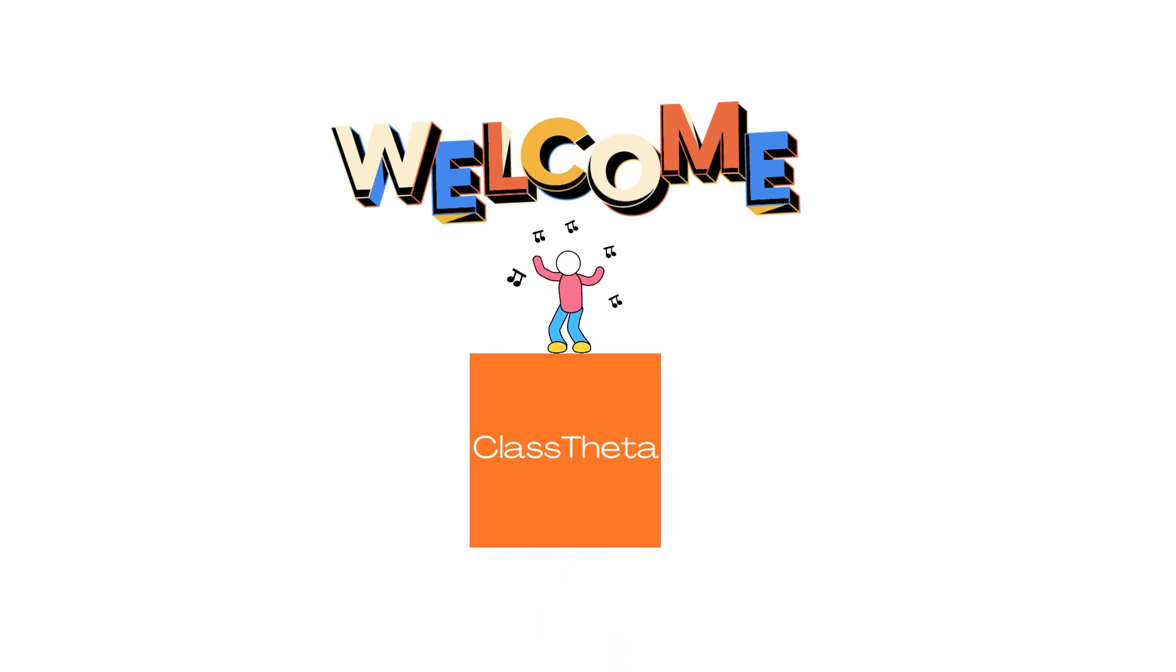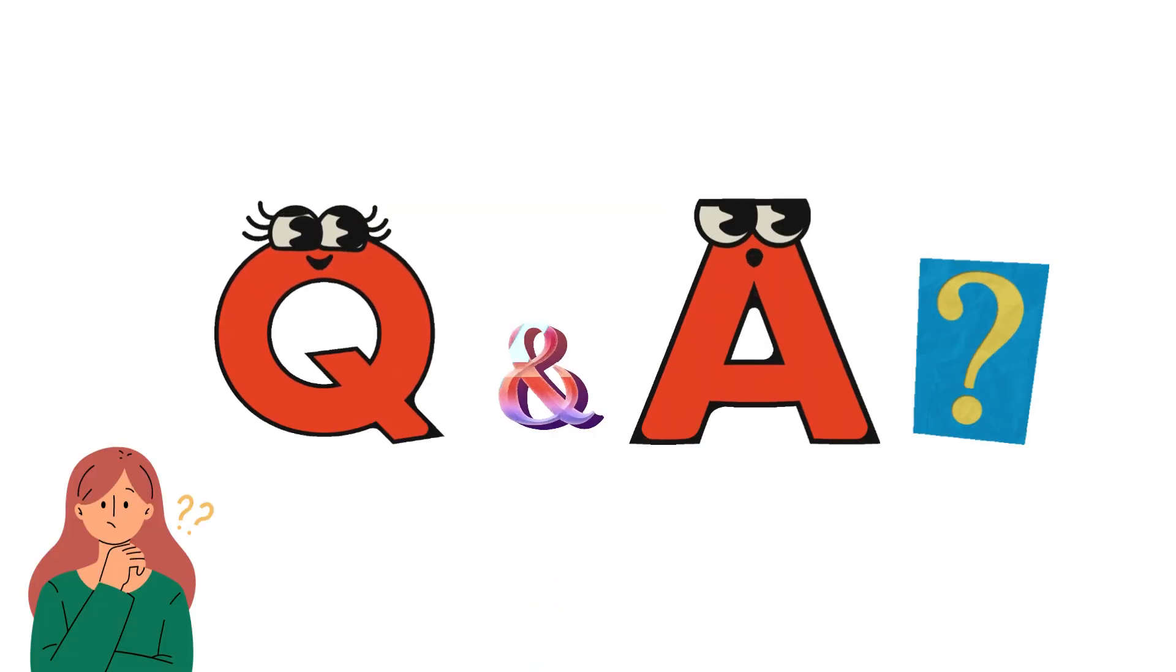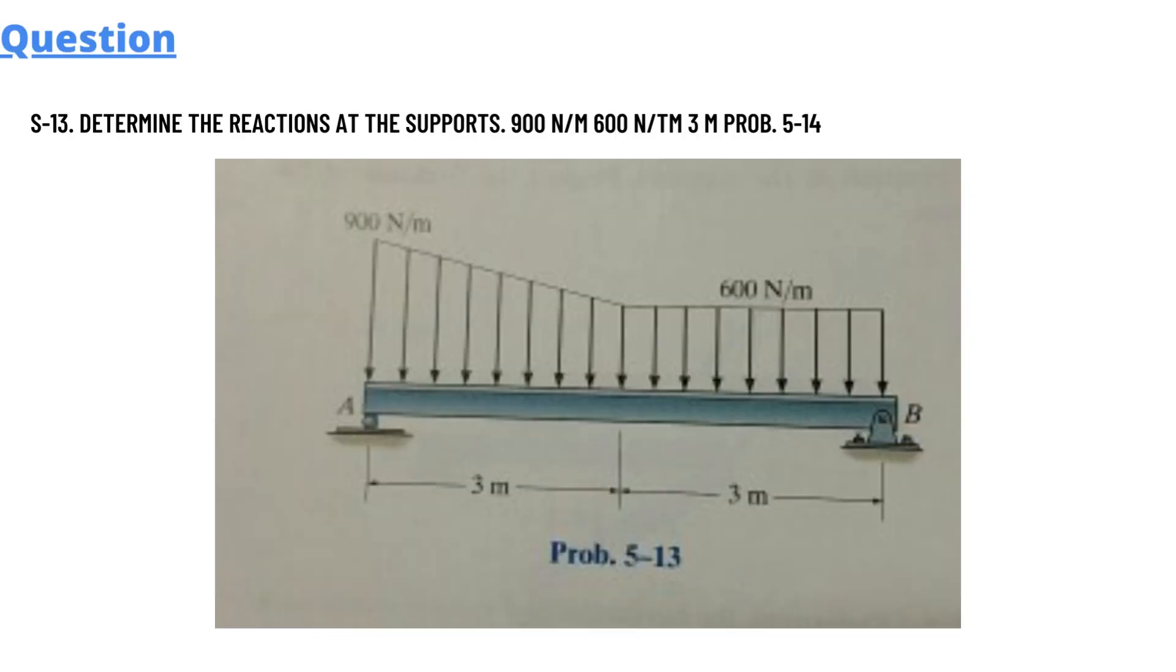We will be discussing different questions, and for today our question is a mathematics and physics question. So let's get into it. Our today's question is: determine the reaction at the supports, 900 N/m and 600 N/m as shown in the graph.